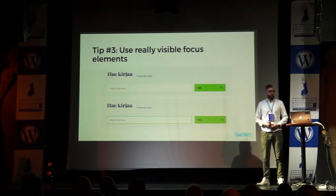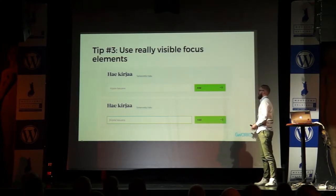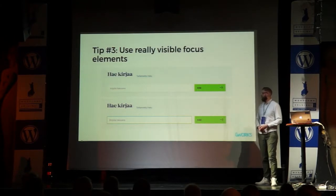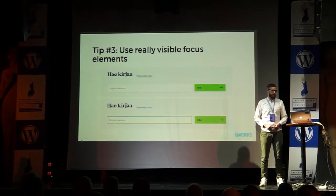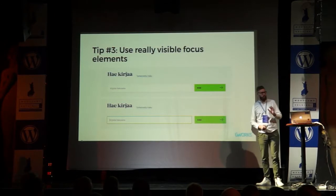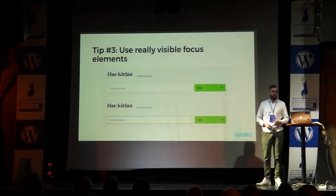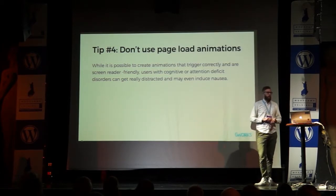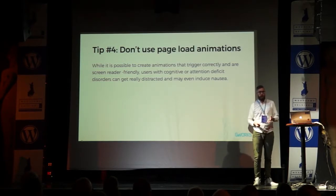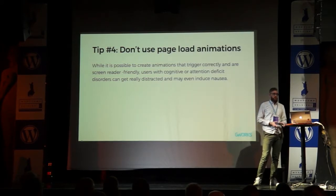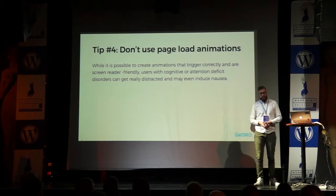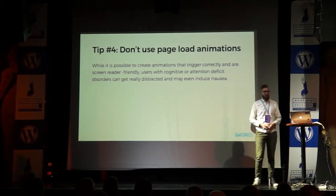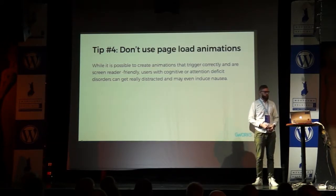Tip number three is to use really visible focus elements. In our search, you can see there's a pretty big green focus indicator — and this could actually even be bigger, like five or ten pixels more. For those with partial blindness or cognitive problems, it's really a lot easier if you really highlight the element you're on. Another thing, which is kind of sad, is that you shouldn't use page load animations. While it is possible to create animations that work and are screen reader friendly, users with cognitive disorders or attention deficit disorders can get really distracted, and that may even cause nausea.